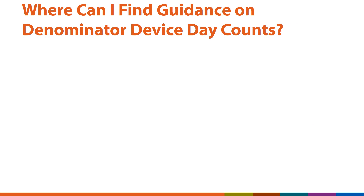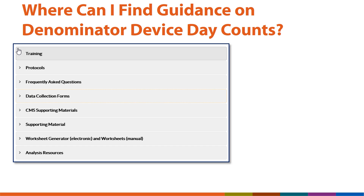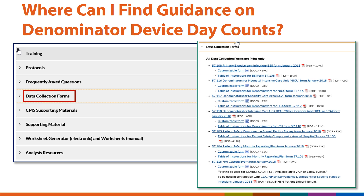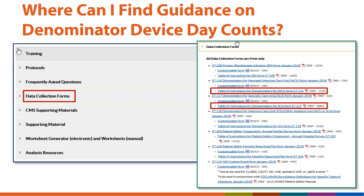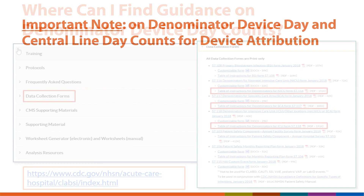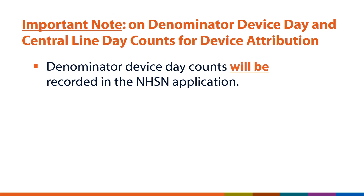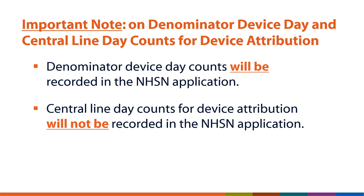Where can I find guidance on denominator device day counts? On the Surveillance for Bloodstream Infection NHSN website, you will find the Data Collection Forms tab. Once you click on this tab, you will find an expanded list that includes the Table of Instructions for Denominators for Neonatal Intensive Care Units or NICUs, Specialty Care Areas or SCAs, and Intensive Care Units or ICUs. Please note that denominator device day counts will be recorded in the NHSN application; however, central line day counts for device attribution will not be recorded in the NHSN application.